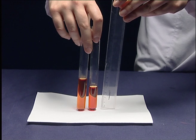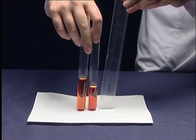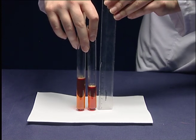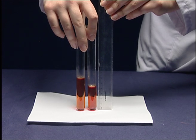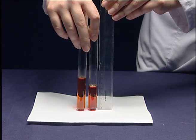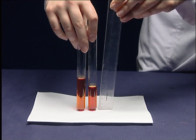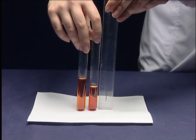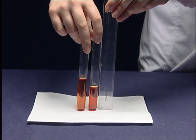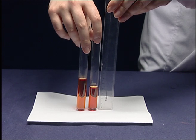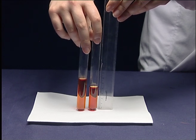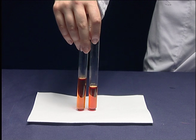Pour the solution from the standard test tube into other test tubes until the same color is observed. Then measure the height differences with the ruler and write the height differences in your report.